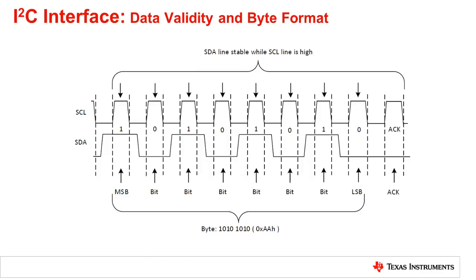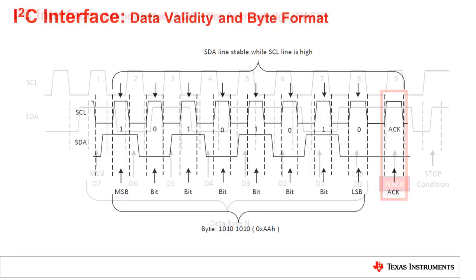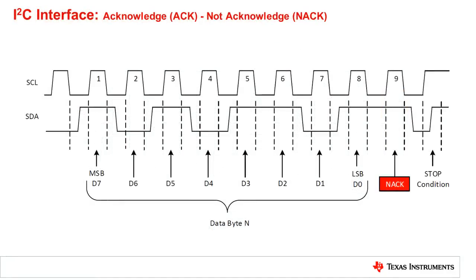Each byte of data, including the address byte, is followed by one ACK bit from the receiver. The ACK bit allows the receiver to communicate to the transmitter that the byte was successfully received and another byte may be sent. Before the receiver can send an ACK, the transmitter must release the SDA line. To send an ACK bit, the receiver pulls down the SDA line during the low phase of the ACK/NACK related clock period, period 9. When the SDA line remains high during the ACK/NACK related clock period, this is interpreted as a NACK.